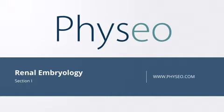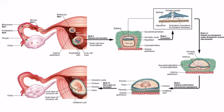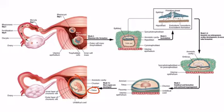Welcome to section one of renal embryology. In this section, we'll be discussing the normal development of the renal system. Let's get started. This is the embryo overview figure described in detail in section one of the reproductive embryology chapter, and you can see a lateral view of the fetus right here. We would see something like this around week 12, after most organs have differentiated.